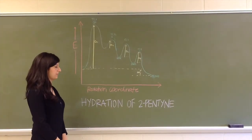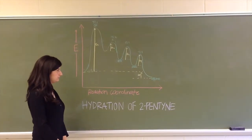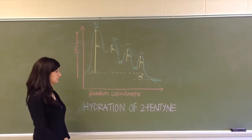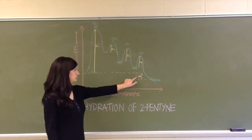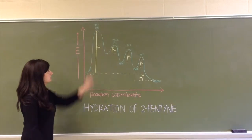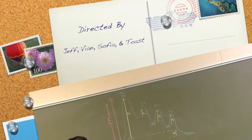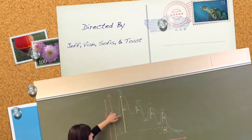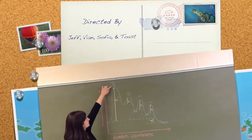This is the proposed energy diagram for the hydration of 2-pentine. The overall reaction is exothermic. There are four transition states. The first one having the highest energy of activation because it leads to the formation of a carbocation, which is a very unstable species.